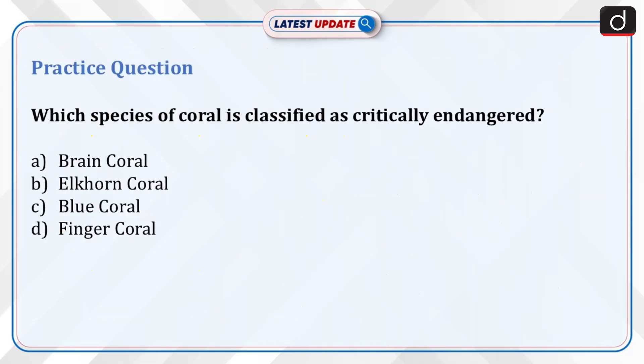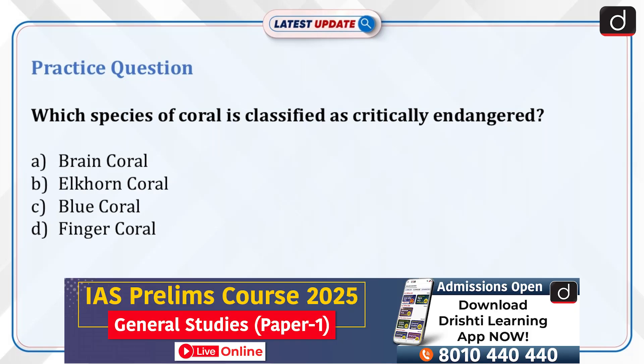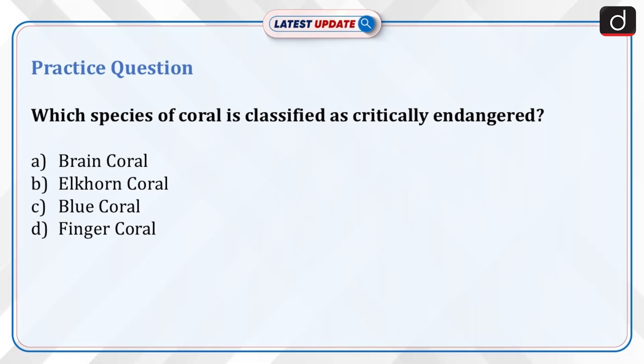Now it's time to test your knowledge. What is the primary pollutant measured in Delhi's AQI? Carbon monoxide, sulfur dioxide, PM2.5 and PM10, or nitrogen dioxide? Send your answer in the comment section.